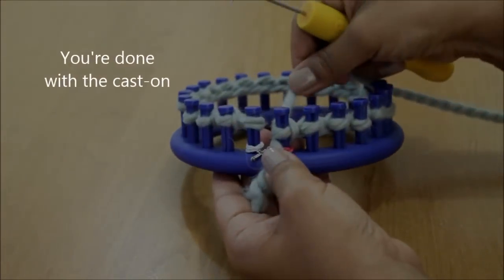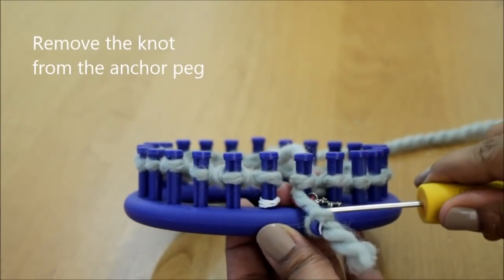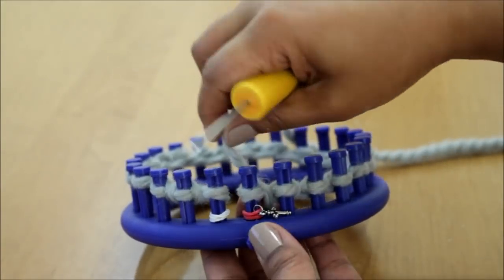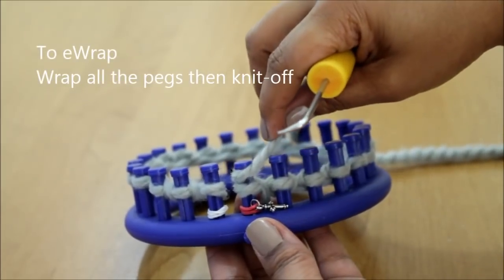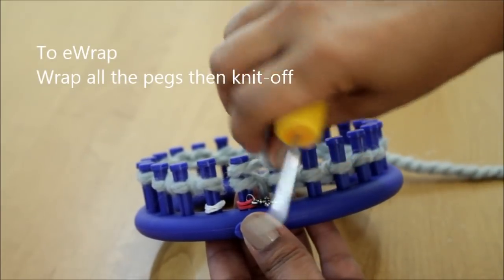Once you knit off that peg you're done with your cast on and you're ready for row one which is a row of knit stitches. But first let's take the knot off the anchor peg. Your yarn is now secure and we'll start by wrapping every peg.